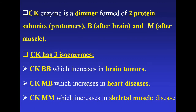CK enzyme is a dimer formed of two protein subunits, or protomers, B and M. B denotes the brain and M denotes the muscle. This CK enzyme has three isoenzymes. CK-BB, with two brain subunits, increases in brain tumors. CK-MB, with one muscle and one brain protomer, increases in heart diseases. CK-MM, with two muscle subunits, increases in skeletal muscle disease.